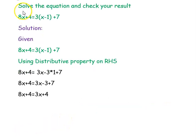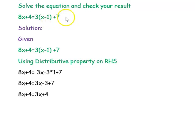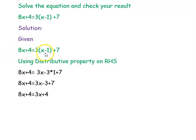Here we go with the next question: 8x plus 4 equal to 3 times (x minus 1) plus 7. We have to solve the equation and check our result. We are writing the given equation: 8x plus 4 equal to 3(x minus 1) plus 7.